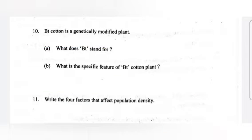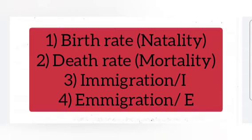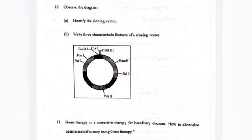Question 11. Write four factors that affect population density. Answer: 1. Birth rate. 2. Death rate. 3. Emigration. 4. Immigration.